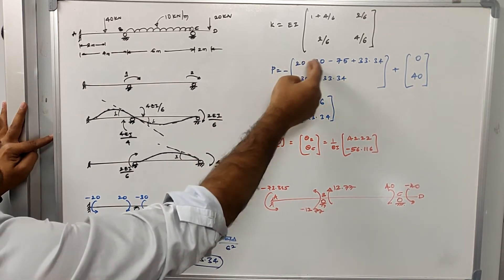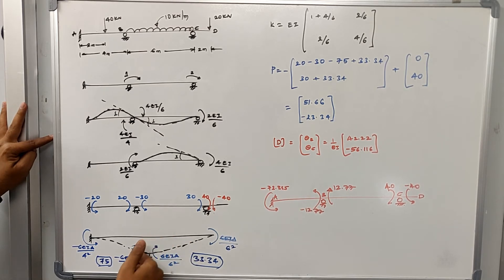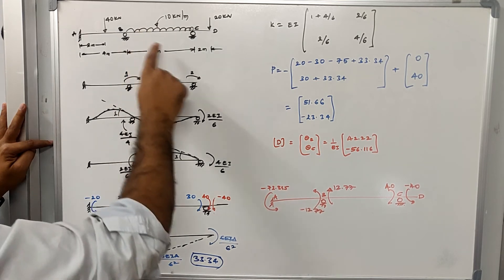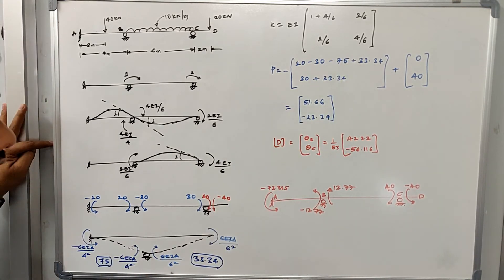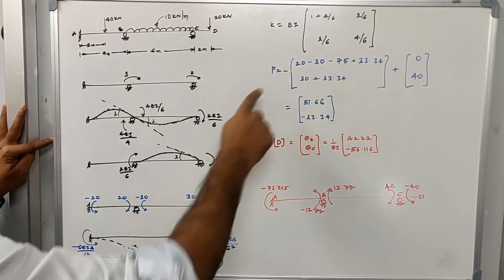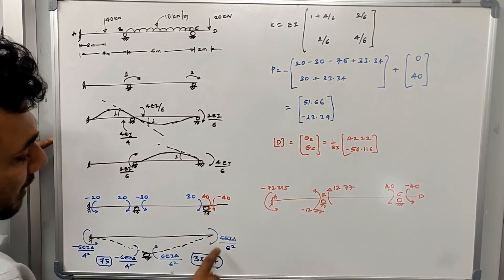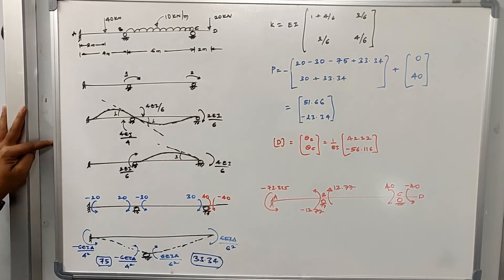At the first coordinate (joint B), we have two fixed end moments from loading: 20 and −30. Due to sinking at the same coordinate, we have additional moments of −75 and 33.34. At the second coordinate (joint C), we have a moment of 30 kN·m from loading, and the moment due to sinking of support B is 33.34, which is also included.